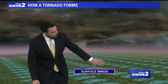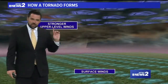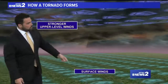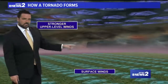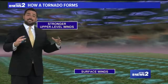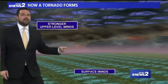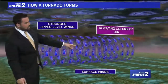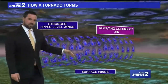First off, you have to have winds at the surface going in one direction. At the same time, on days when there are going to be tornadoes, the wind direction from the top of the atmosphere to the bottom is different. Those winds moving at different speeds and in different directions can encourage the air in between to kind of start to spin a little bit.